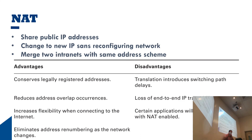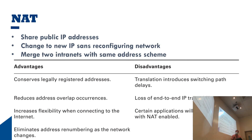Going through the advantages and disadvantages of NAT: you can have thousands of devices sharing one public IP address. The book says it reduces address overlap occurrences, but I'd disagree — I think what it actually does is mitigate the problems associated with having duplicate addresses. It also increases flexibility when connecting to the internet and eliminates address renumbering as networks change, which can be a very big advantage.